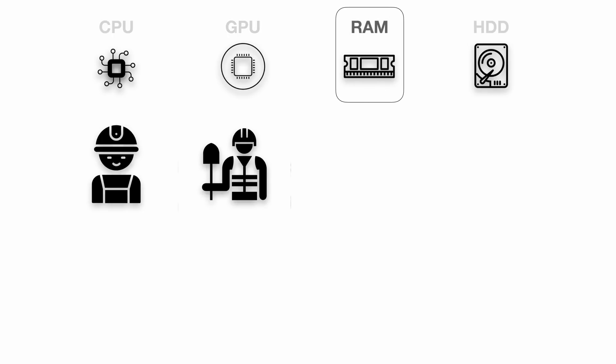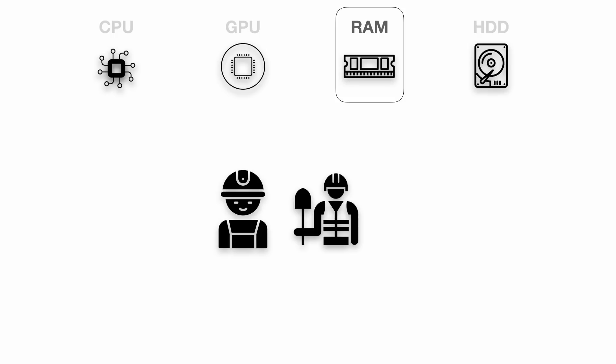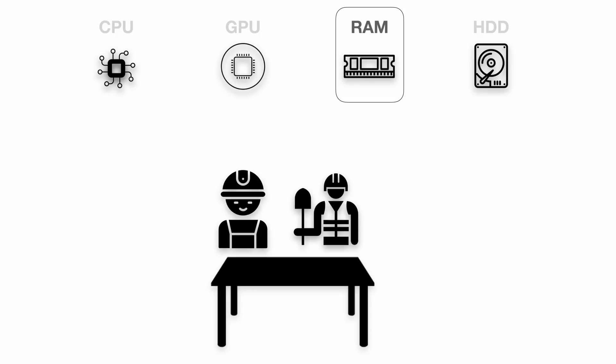What's the RAM? Imagine these two workers are working on something you asked them for. You can think of the RAM as simply a table in front of them where they put the information they're currently working on. The larger the table is, the more stuff they can work on at the same time.